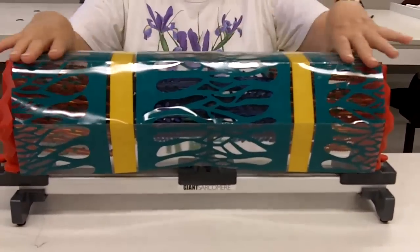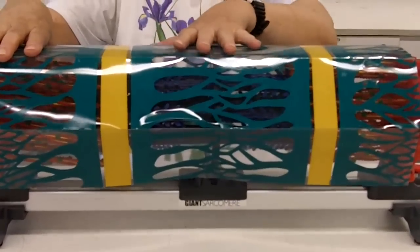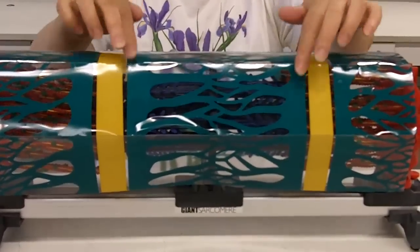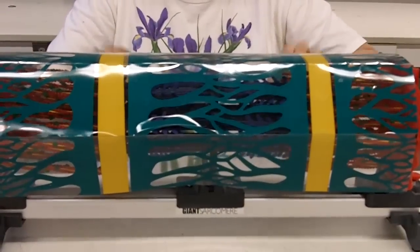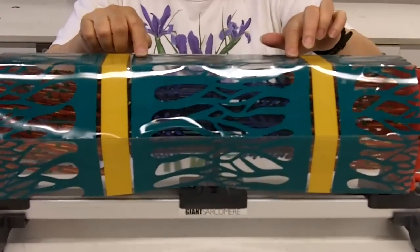The plastic can be removed. The green represents the sarcoplasmic reticulum. The enlarged ends are called the terminal cisternae, and they store calcium ions.